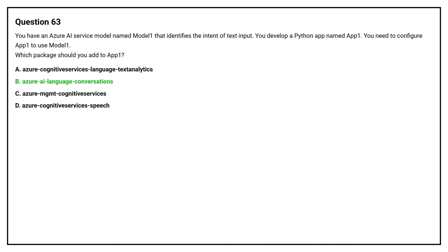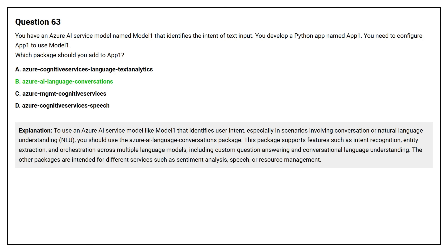The correct answer is Option B: azure-ai-language-conversations. To use an Azure AI service model like Model 1 that identifies user intent, especially in scenarios involving conversation or natural language understanding (NLU), you should use the Azure AI Language Conversations package. This package supports features such as intent recognition, entity extraction, and orchestration across multiple language models, including custom question answering and conversational language understanding. The other packages are intended for different services such as sentiment analysis, speech, or resource management.